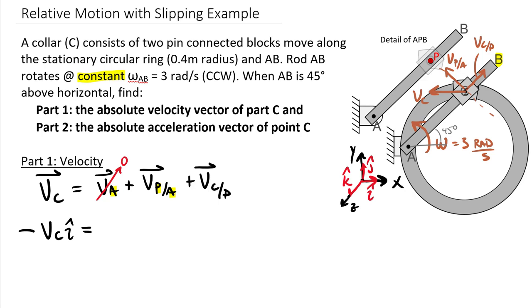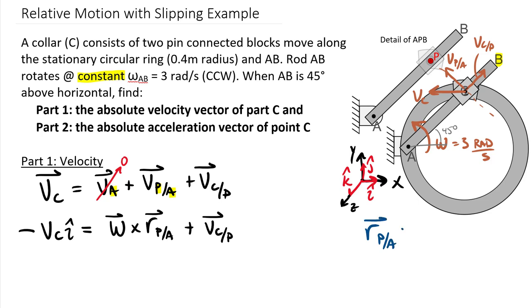On the right-hand side, VA goes to zero. The velocity of P relative to A is based on the omega of the arm crossed into R of P relative to A. The last term is the slipping velocity, the velocity of C relative to P. I need R of P relative to A, which goes from A up to point P. Even though C and P are currently in the same place, we write R of P relative to A to correspond correctly to the velocity of P relative to A in our equation.